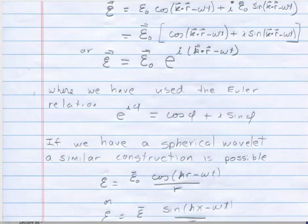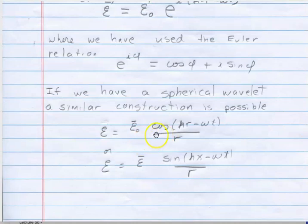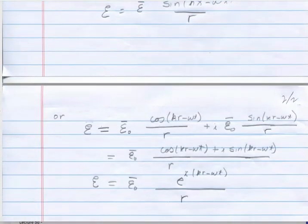We could do an absolutely similar thing for spherical wavelets. Again, if I take the real part as the cosine and i times the sine form of the spherical wavelet,